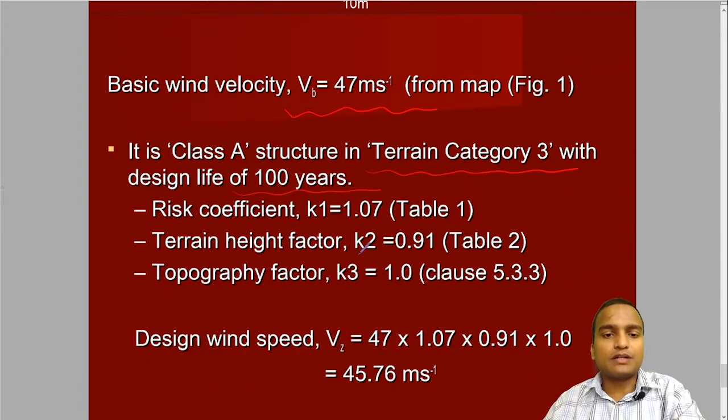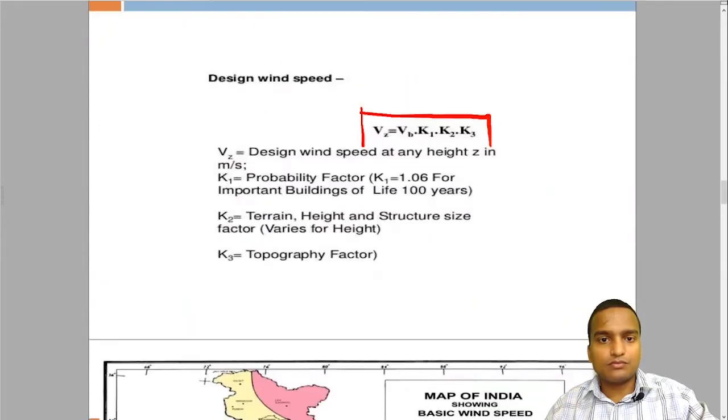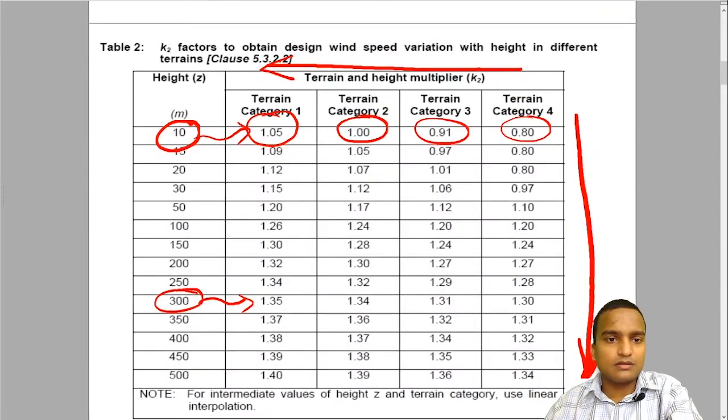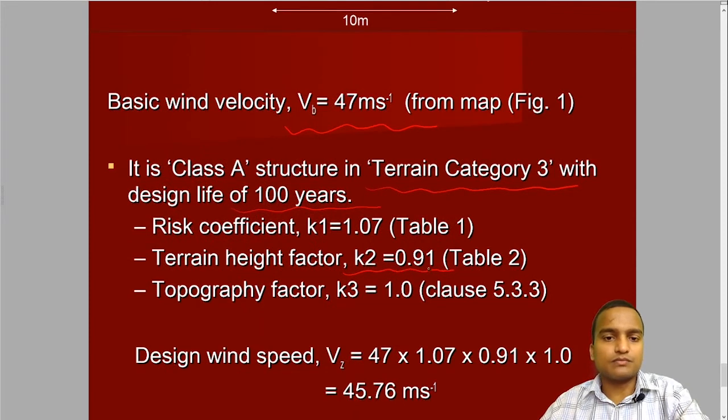Now we have to calculate the terrain height factor K2. What it will be? We go to the table of K2, and we see in this table our height of building is only 10 meter. What is the terrain category? The terrain category is 3. So we take this value 0.9. And we have taken 0.91.